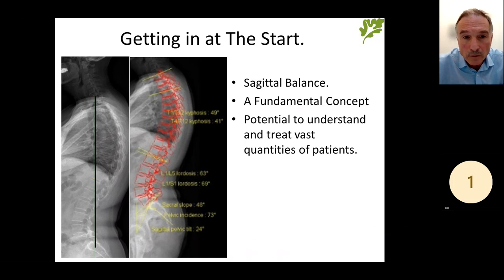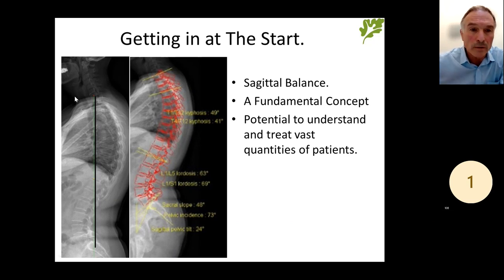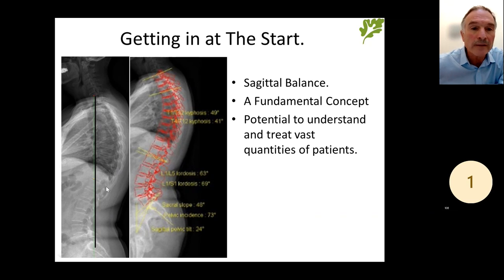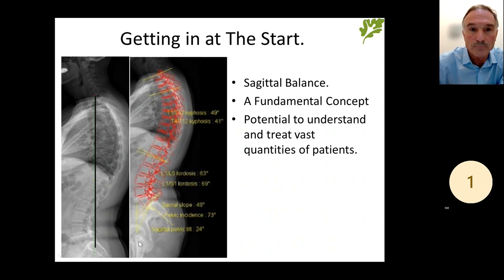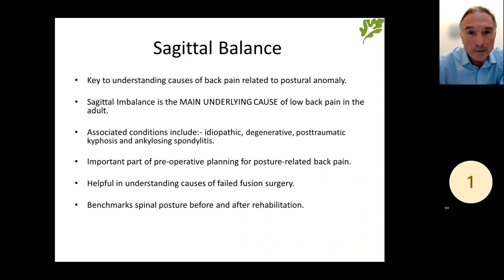Learning about how we stand, there's one fundamental concept: sagittal balance. The spine has a sigmoid curvature — it's not a straight line. If you had a straight line, the vertebral bodies and discs would basically impact into each other. The sigmoid curvature acts like a giant spring, allowing the spine to absorb load and shock through life. But these curves all have to be in careful proportions so that they balance. This sagittal balance line is measured in radiology by taking the midpoint of the C7 vertebral body and dropping a vertical. That line should pass within two centimetres either side of the posterior margin of the S1 disc space. If it becomes imbalanced, it's one of the main underlying causes of low back pain in the adult.